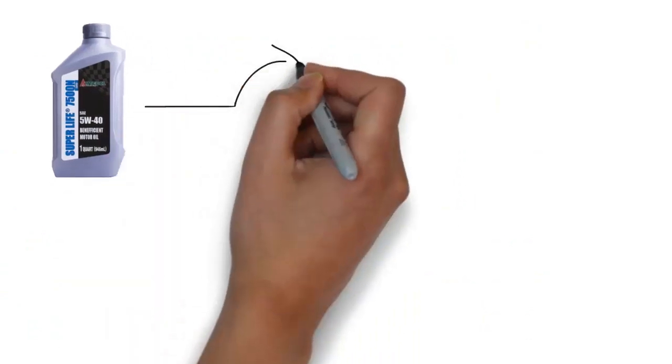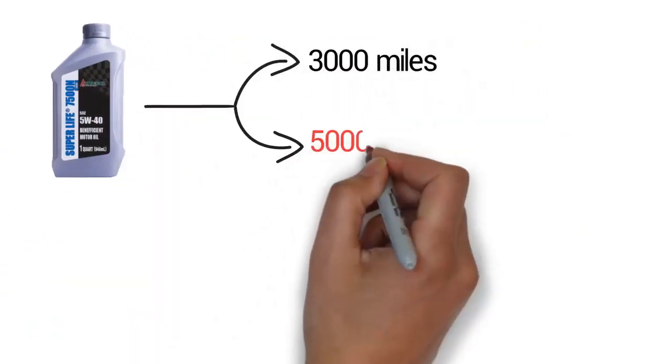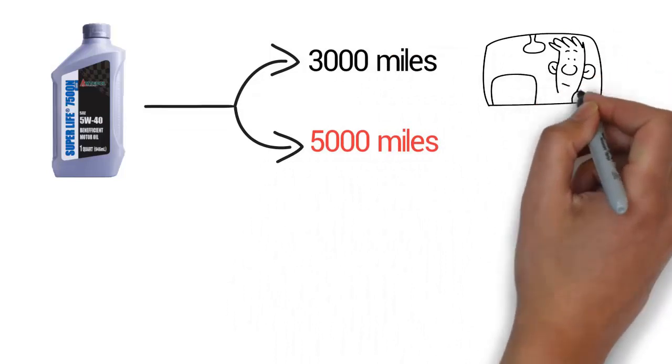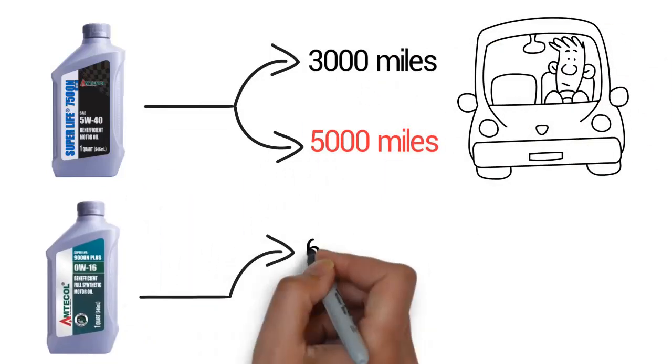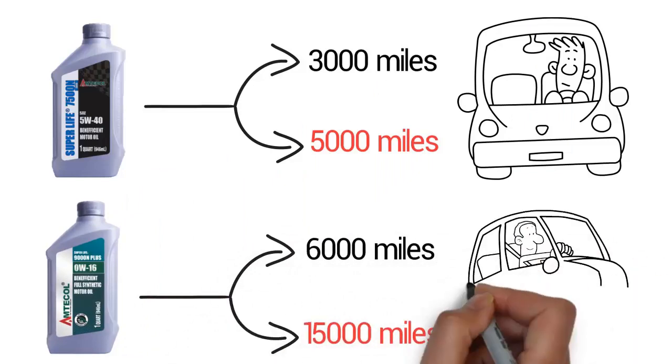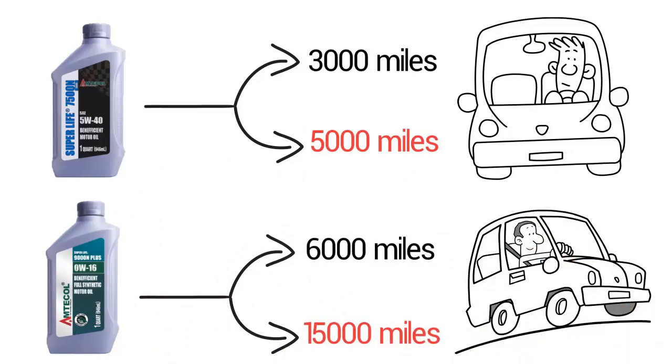Conventional oil change intervals range from 3,000 miles to 5,000 miles depending on the car's driving in the city or freeway. Synthetic oil change intervals range from 6,000 miles to 15,000 miles depending on the car's driving in the city or freeway.